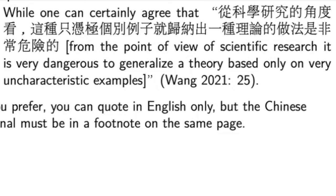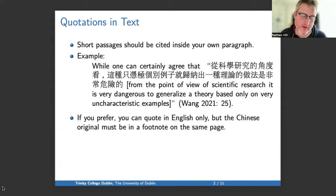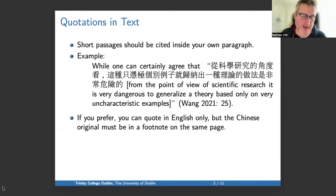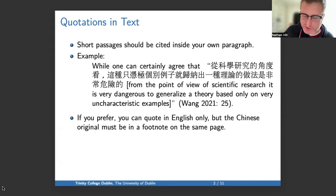Some characteristics to point out: the quotation starts and ends with quotation marks. The Chinese is presented first, then the English in square brackets, and the punctuation — the period for the sentence — comes after the citation. If you prefer, you could quote in English only, in which case you wouldn't have the square brackets, but the Chinese would need to be put in a footnote on the bottom of the same page. Under no circumstance do you just quote in English without giving the Chinese — you have to give the original in Chinese.